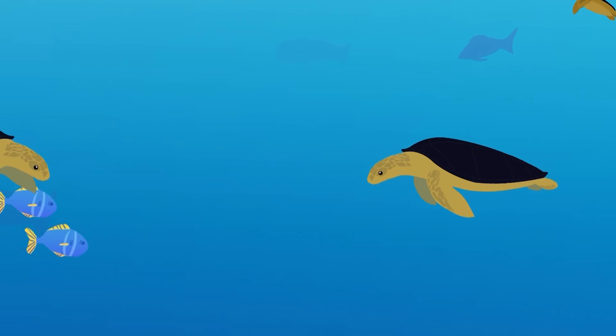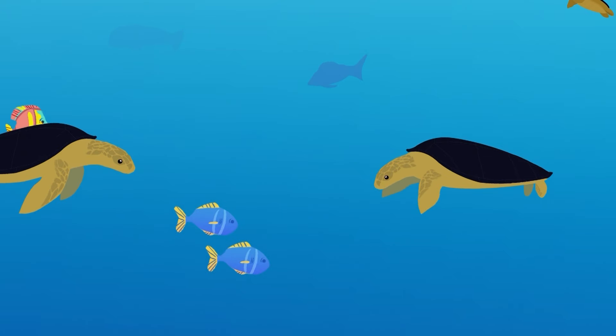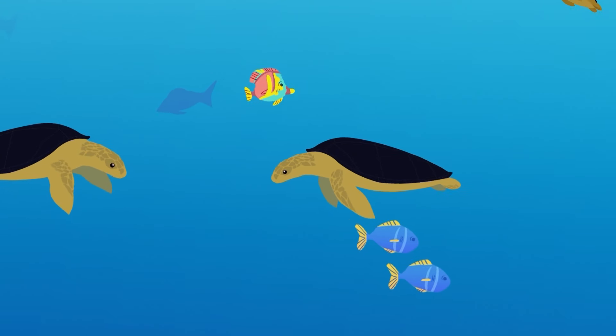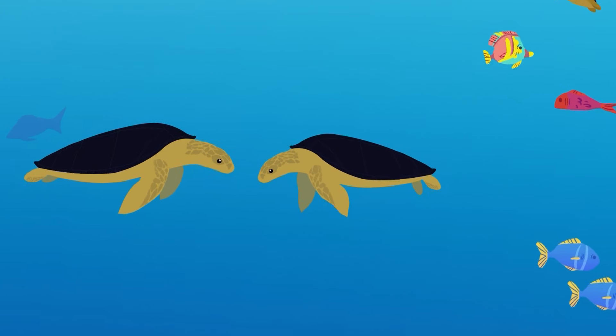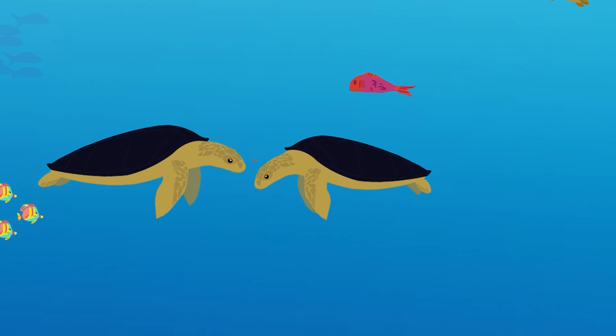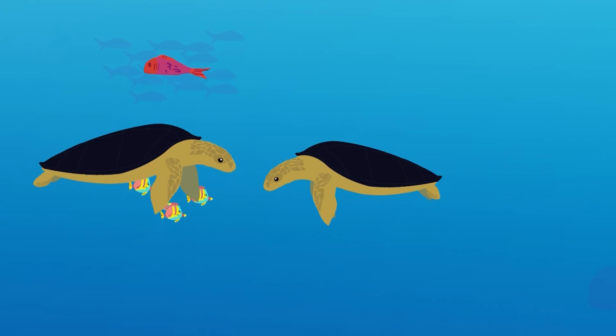Male and female turtles gather in groups to mate out at sea, close to the nesting beaches where they were born. Female turtles will mate once every two to eight years, depending on the age and environmental conditions.